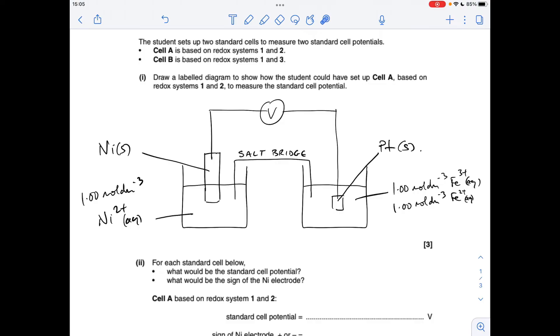Okay, so the cell diagram to start with. We're putting the nickel/nickel 2+ half-cell against the Fe3+/2+ half-cell. Two beakers with solutions connected by a salt bridge. Must make sure that your salt bridge dips into the solutions. In the nickel half-cell—and it doesn't matter which way around you put these by the way—we've got a solid nickel electrode dipping into a one mole per decimeter cubed solution of nickel 2+ ions.